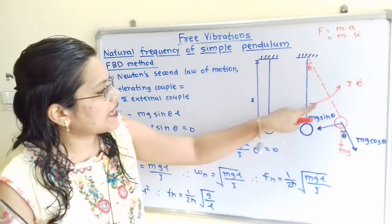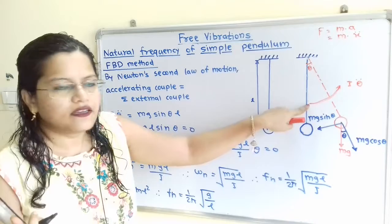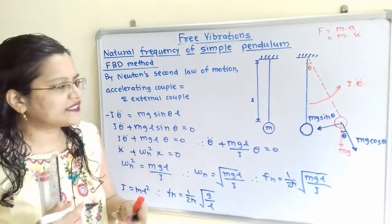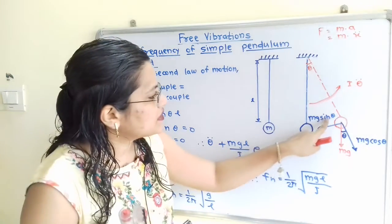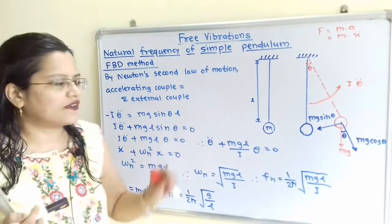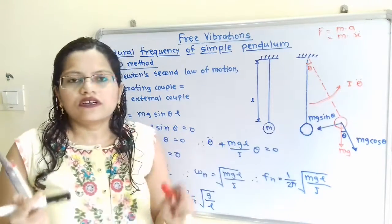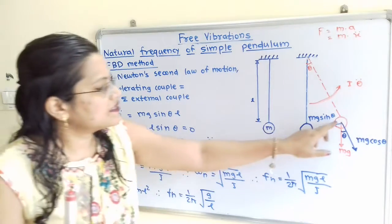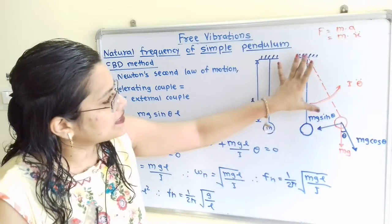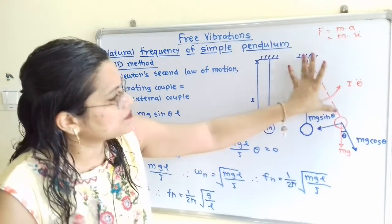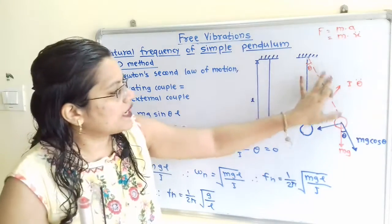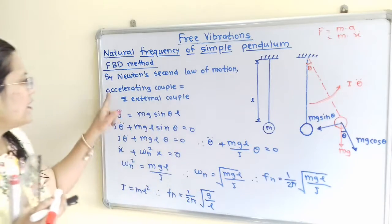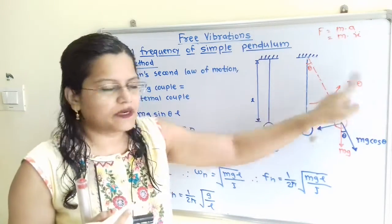The MG sin theta component acts in the anti-clockwise direction, and to oppose or resist this, an equal MG sin theta acts in the opposite direction. We have to write it as an external couple, which means this component multiplied by the distance from the fixed end. The distance from the fixed end is L.